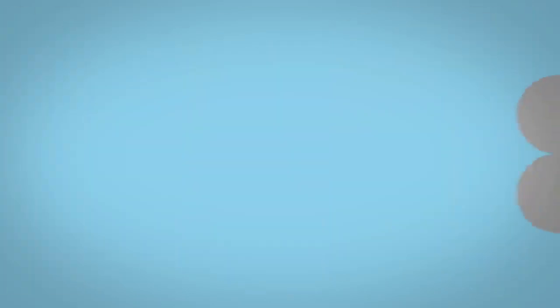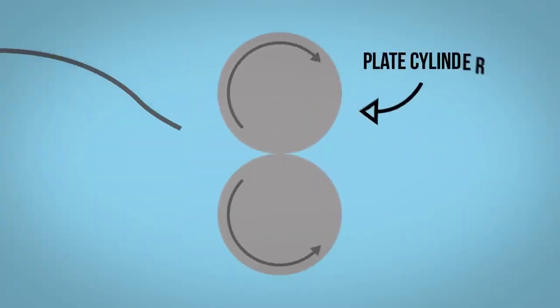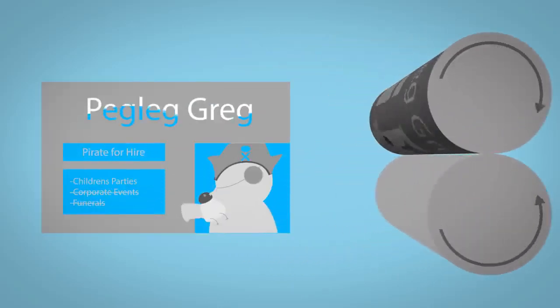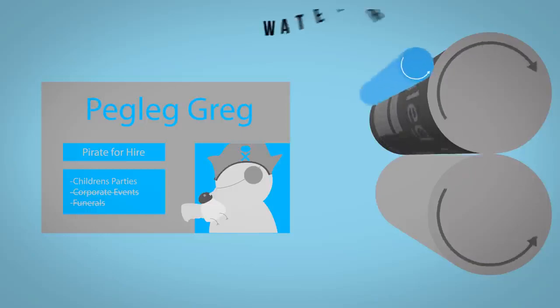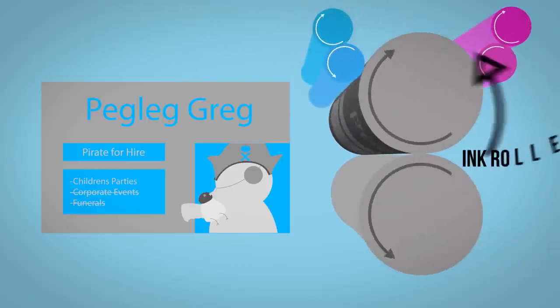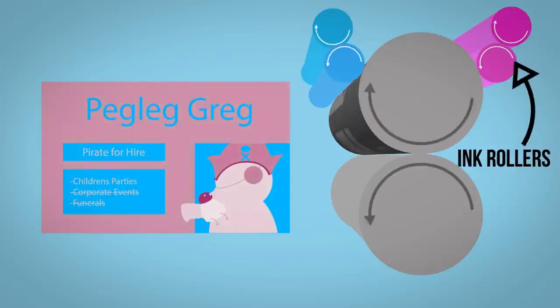Each plate is then loaded onto a roller known as the plate cylinder. Each revolution of this cylinder dampens the non-image area of the plate with water from the dampening system. A vegetable oil based ink is then passed through a series of rollers and finally onto the image area of the plate.